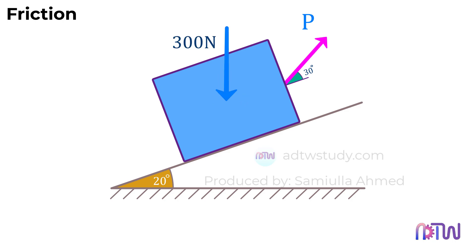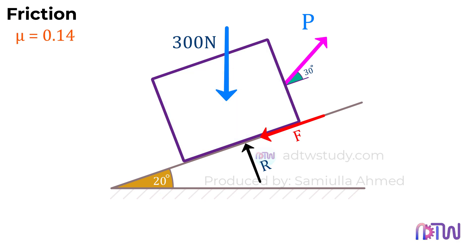Apart from these two forces, we have a normal reaction force, which is applied by the inclined surface on the box, and the frictional force, which acts opposite to the direction of movement of the box. Let's see how to calculate the force required to pull the box in this case.